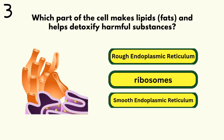Number 3. Which part of the cell makes lipids and helps detoxify harmful substances? Smooth endoplasmic reticulum.